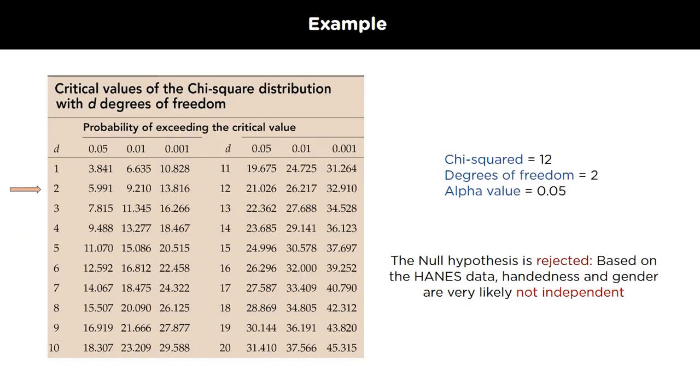Now, we got our x-value, which is also the chi-square value to be 12 and the degree of freedom is equal to 2, which is calculated by r-1 into c-1, where r and c were rows and columns respectively. The alpha value was assumed to be 0.05. We compare our chi-square value with the critical value of the chi-square distribution with the degree of freedom. So, for degree of freedom 2 and alpha level 0.05, the value was 5.991, which was lower than our chi-square value. This states that handedness and gender are not very likely to be independent.